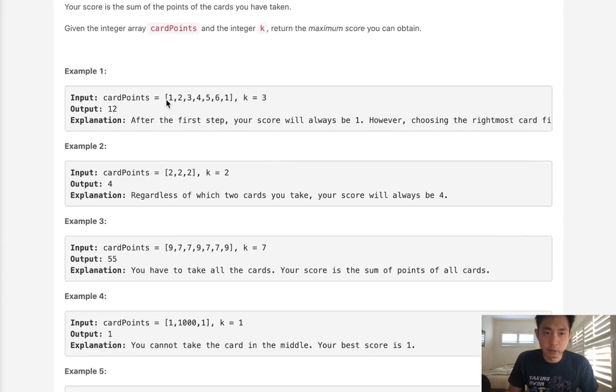Here in this example, we have an array full of cards and we can take three. In order to maximize our score, we would take the ones at the ends: one, six, five. That would be 12.